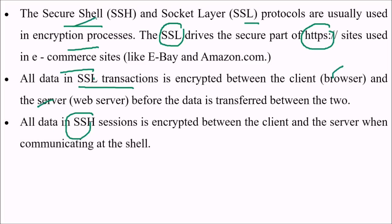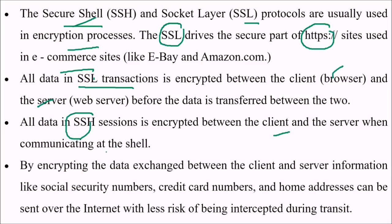All data in an SSL transaction is encrypted between the client and the server before the data is transferred. Similarly, all data in a Secure Shell session is encrypted between the client and the server. By encrypting the data exchanged between client and server, sensitive information like social security numbers, credit card numbers, and home addresses can be sent over the internet with little risk of being intercepted during transit.